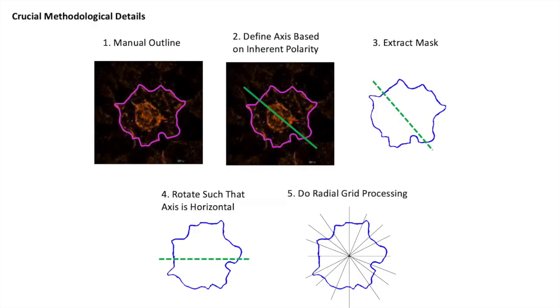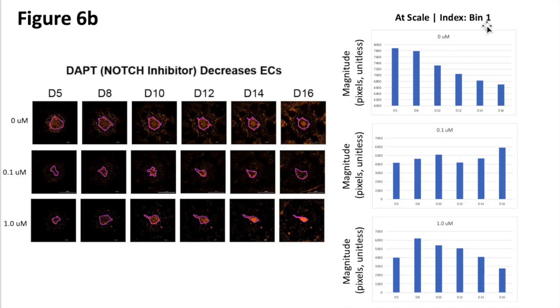For the inner rings, we also align them like we did before according to the axis that's inherent to the organoids. And in this way, we standardize all the orientations before we measure their shape, also through this radial grid system.